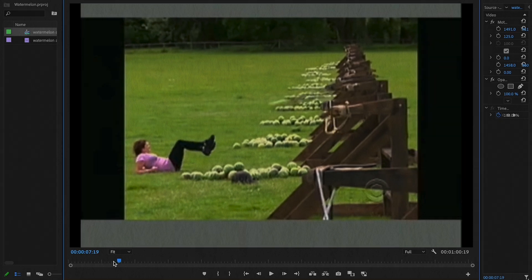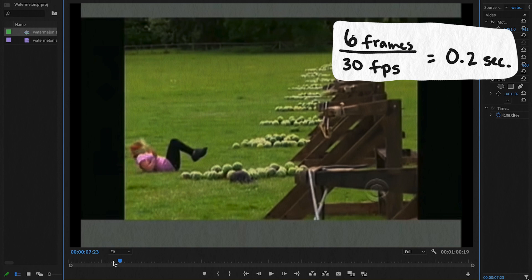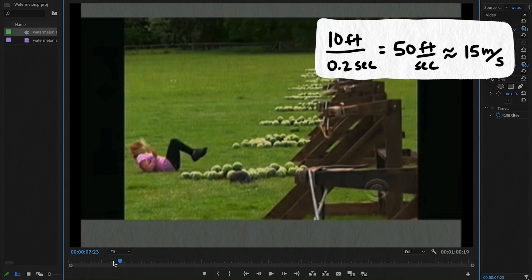The watermelon covers this distance in 6 frames, which is about 0.2 seconds. This means that the watermelon is traveling about 50 feet per second, or about 15 meters per second when it collides with her face.